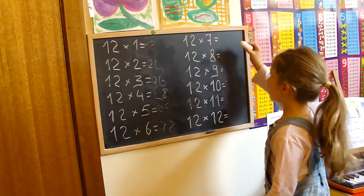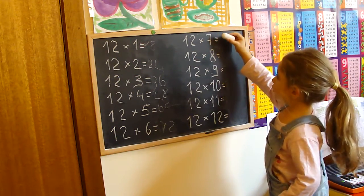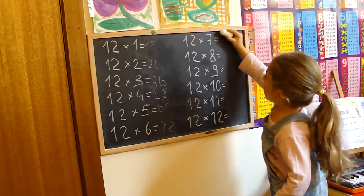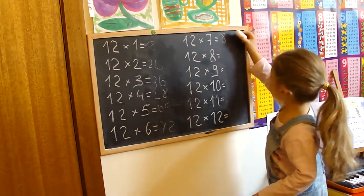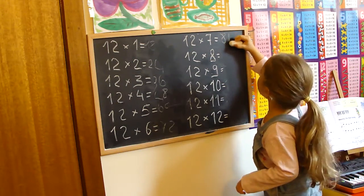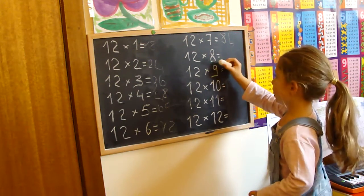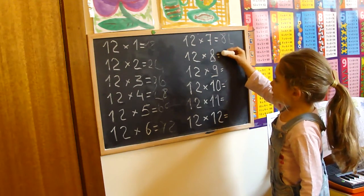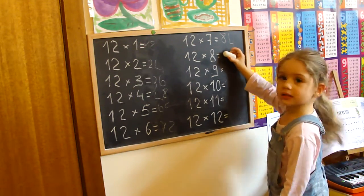Twelve times seven, eighty-four. Twelve times eight, eighty-six.